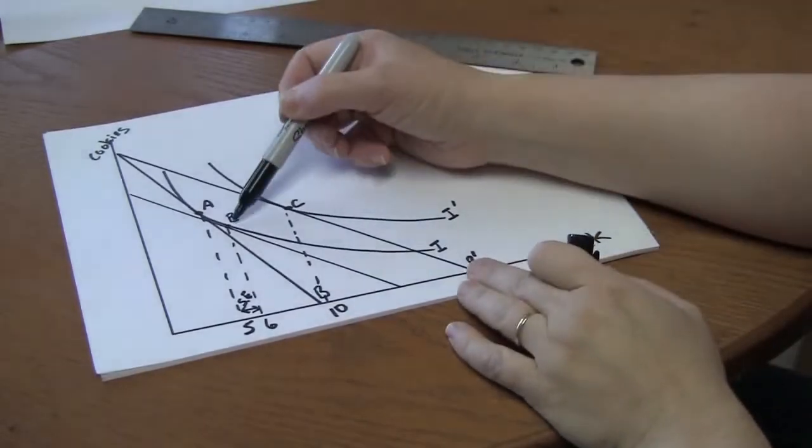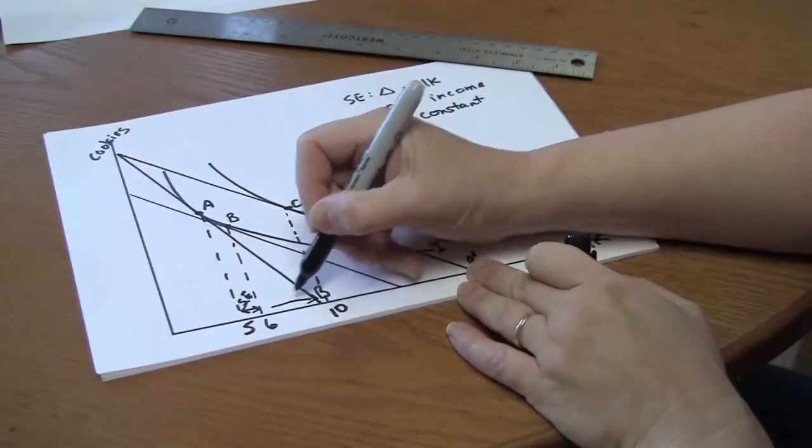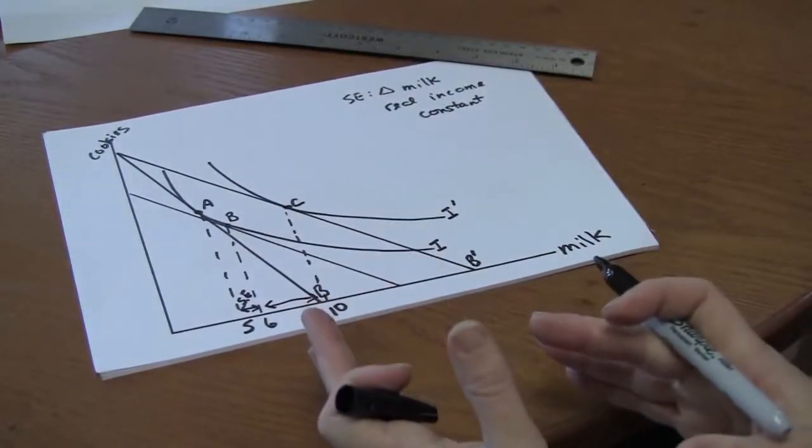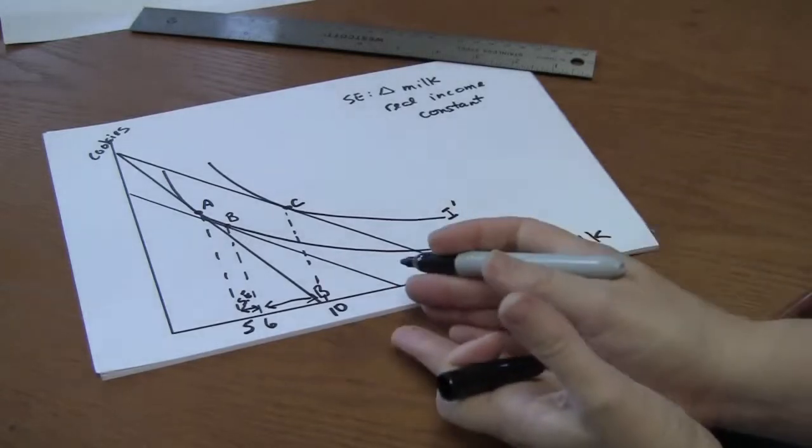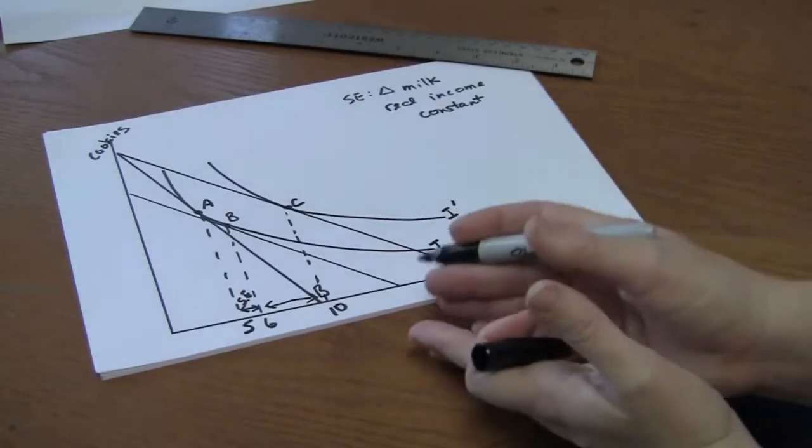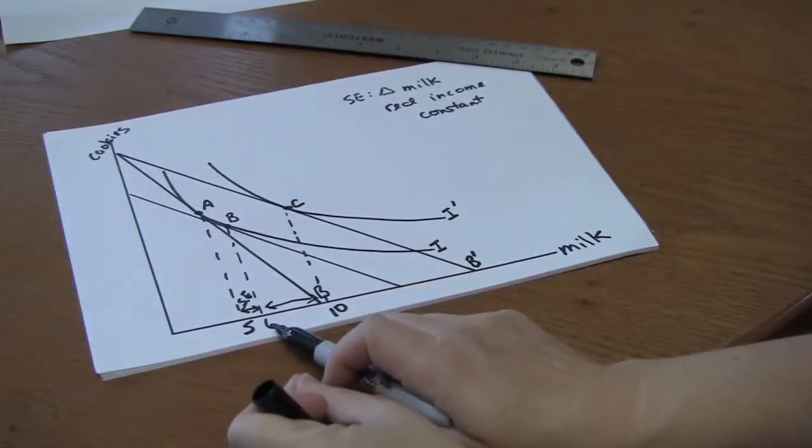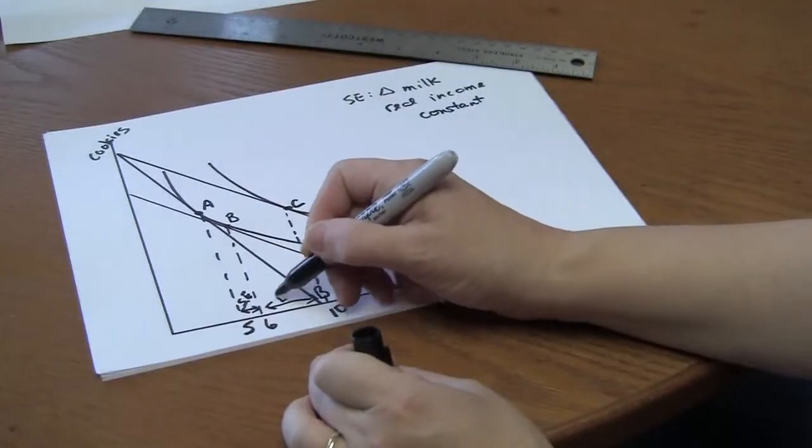The movement from B to C is the impact of falling prices through the increase in consumer's purchasing power. Because milk is now cheaper, the consumer has more purchasing power. Their real income has increased. That increase in real income causes this increase in milk consumption from six to ten cups. That's the income effect.